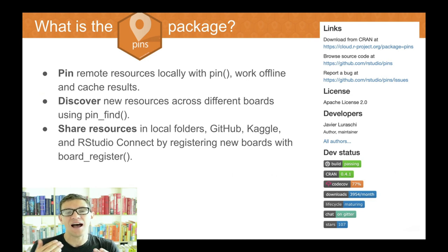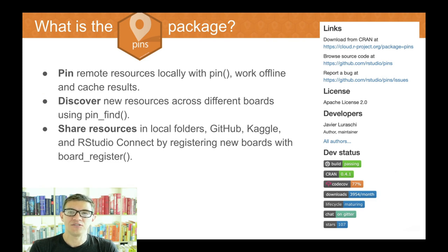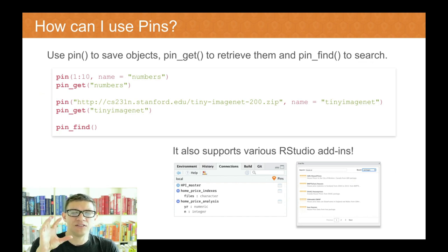These are all things we considered when designing the pins package. The pins package allows you to pin a remote or local resource into your local machine or into remote machines. It allows you to discover datasets, and it allows you to share resources with others in multiple services like Kaggle, RStudio Connect, GitHub, S3, Azure, Google Cloud Compute, and DigitalOcean. The pins package is now on CRAN. You can download the latest version, which is 0.4.1. To use it, after you install from CRAN and run library pins, all you have to do to save an object is call pin with the R object you are interested in storing and then a name.